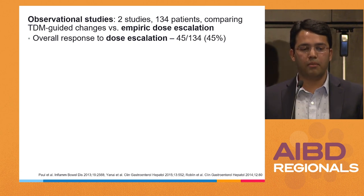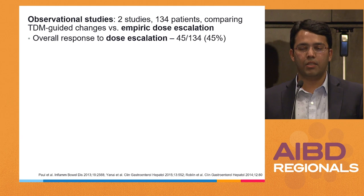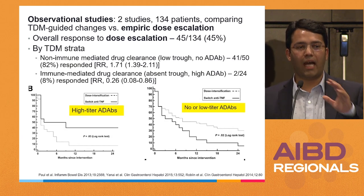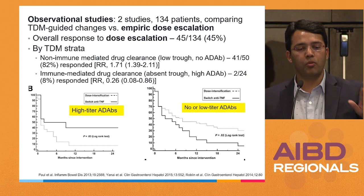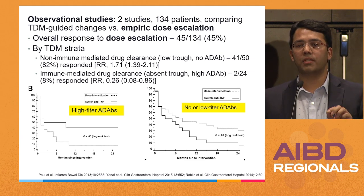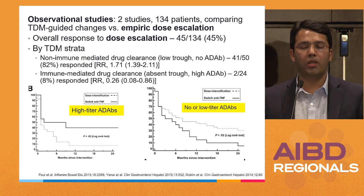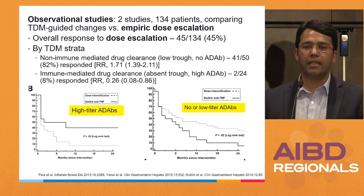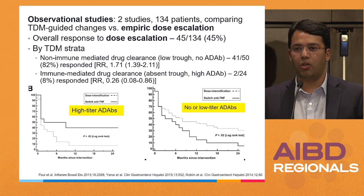We relied on observational data from two to three studies comparing TDM-guided changes to empiric dose escalation — retrospective studies. Overall across 134 patients, roughly 45% responded to dose escalation. But breaking it down by TDM strata: for non-immune-mediated drug clearance — people without anti-drug antibodies and low levels — roughly 80% responded to increasing the drug. On the other hand, for people with immune-mediated drug clearance — high anti-drug antibodies with an absent trough — only 8% responded.